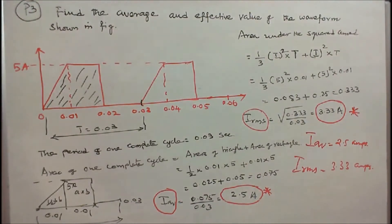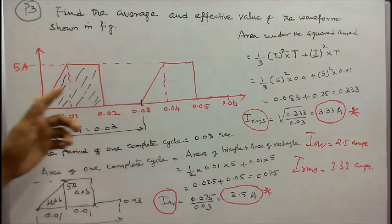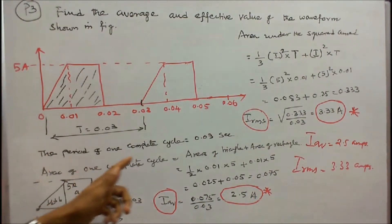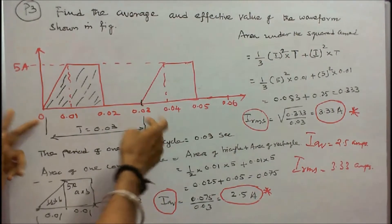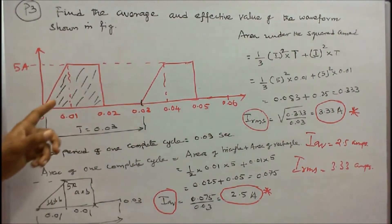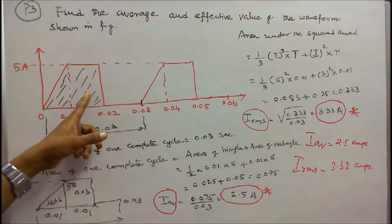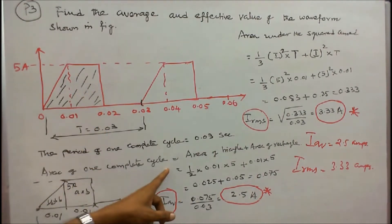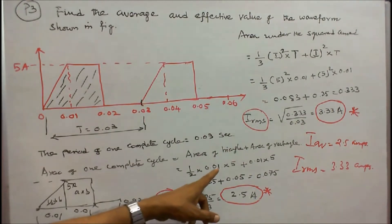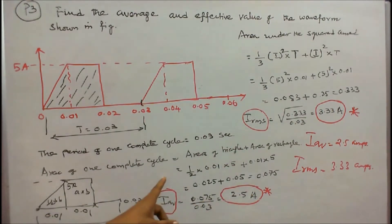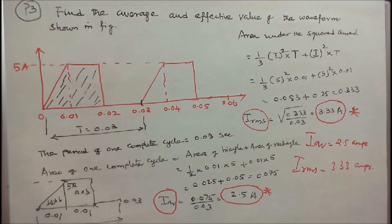Problem 3: Find the average and effective value of the waveform shown in the figure. The peak is 5 amps and the period of one complete cycle is 0.03. The area of one complete cycle equals the area of a triangle plus the area of a rectangle: (1/2 times 0.01 times 5) plus (0.01 times 5), which equals 0.075. I average equals 0.075 divided by 0.03, giving 2.5 amps.